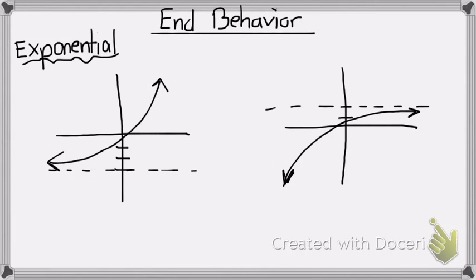Hello everybody! I'm going to teach you how to define the end behavior given exponential graphs. Basically, what I'm going to be doing is looking to see, based on the graph, what my x values are doing in relation to what the y values are doing.